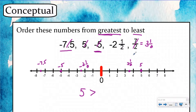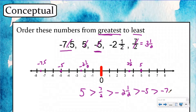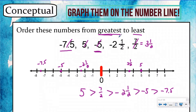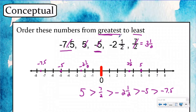My next one is three and one half, which was seven halves, so I'll write seven halves. Then the next furthest to the right is negative two and one half, then negative five, and then my smallest was negative seven and five tenths. Here's my inequality statement answering greatest to least. The key takeaway: it's important to graph numbers on the number line so you can visually see where they are — furthest left is smallest, furthest right is biggest.